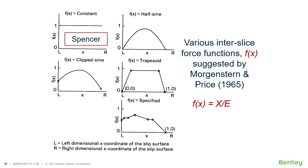That function can be defined several different ways. It can be a constant, which is what Spencer assumed in his methodology. You can use a half sine, a trapezoidal shape, or a user-defined shape, and all of these are selections in the software. The idea is to have this function represent shear forces that are representative of reality in numerical modeling.